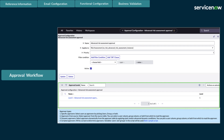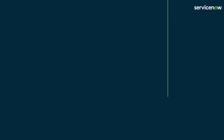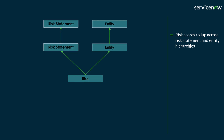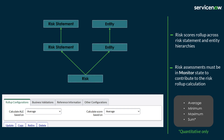One or more approval levels can be created and approval rules configured for each level. Now the assessment preferences are completed, the final step is to define the risk roll-up preferences. Risk scores are calculated across the risk statement hierarchy and entity hierarchies, enabling stakeholders to monitor their risk posture and providing visibility of the overall aggregated risk score. Once the risk assessments are performed and are in monitor state, the system automatically rolls up the qualitative and quantitative risk scores based on the formula selected on the RAM form.